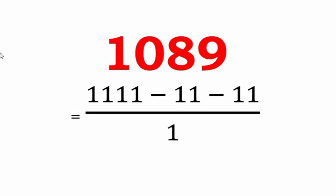We now turn our attention to how to represent 1089 using the digit 1 only, with the help of fractions. We can see that 1089 can be written as 1111 (a 4-digit number) minus 11 (a 2-digit number) minus 11 (another 2-digit number), all divided by 1. This representation is in terms of fraction using only the digit 1.